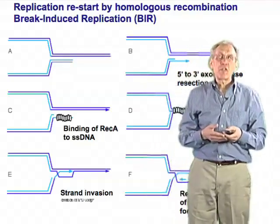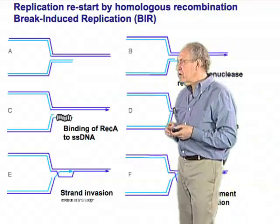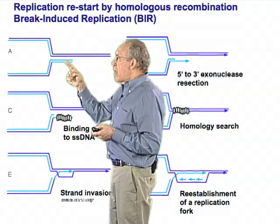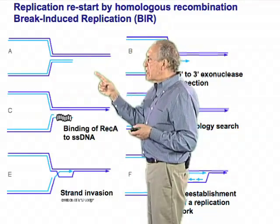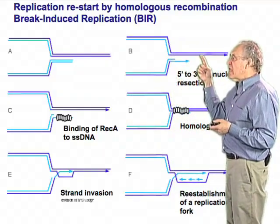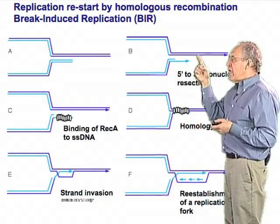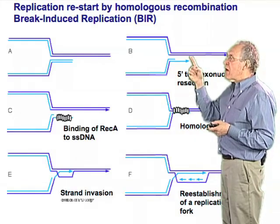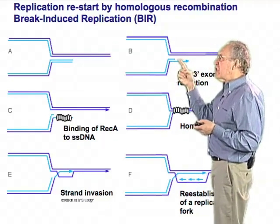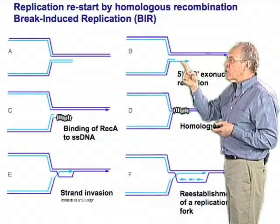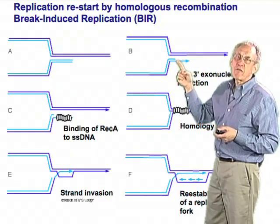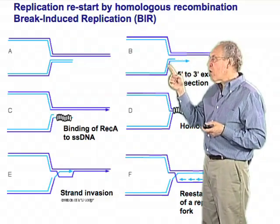Going through the steps of this process: we have a broken replication fork, which is acted upon by enzymes that chew away one of the two strands of DNA. In almost all physiological cases, it is the five-prime-ended strand that is chewed away by exonucleases. The purpose of this is to generate a large region of single-stranded DNA ending at the three-prime end — the business end for doing almost all of homologous recombination.